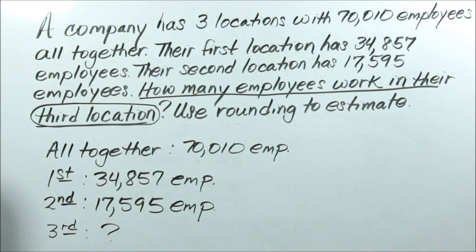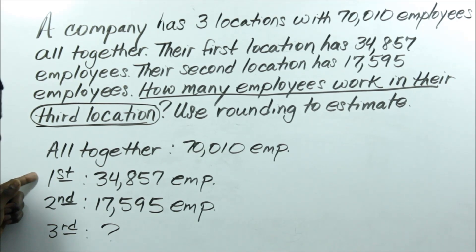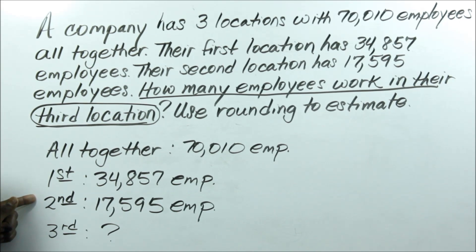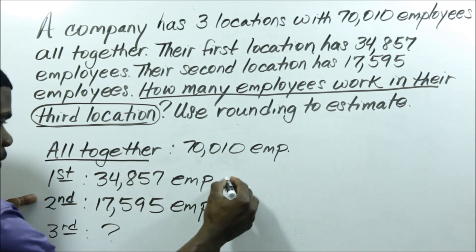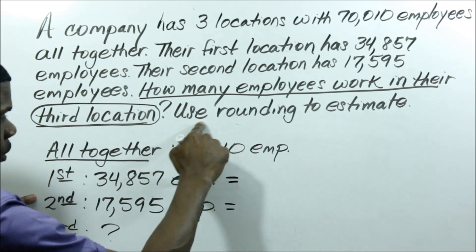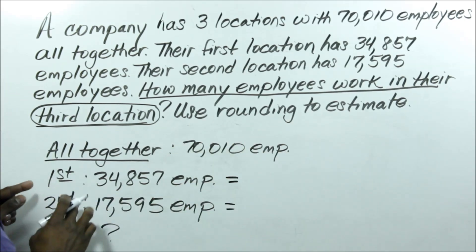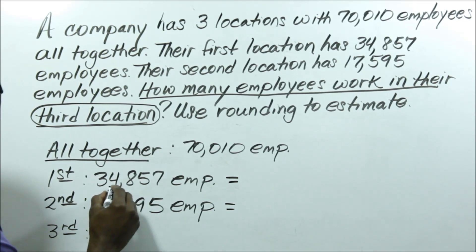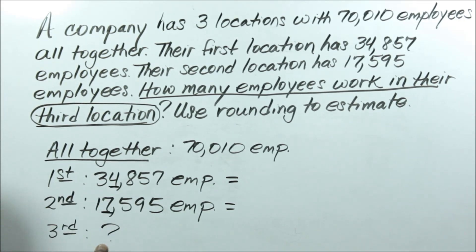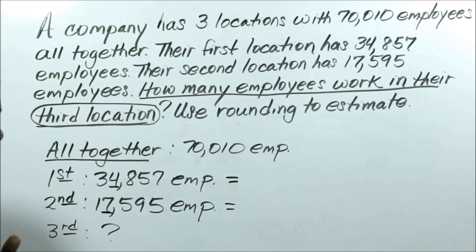We do know how many we have for the first and second locations. My first thought is to find out how many I have in my first and second locations combined, since I need to find the total. But the first thing I need to do is simply round. It says use rounding to estimate.